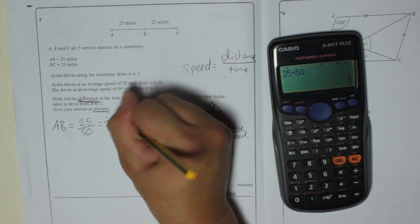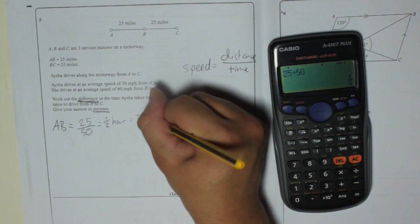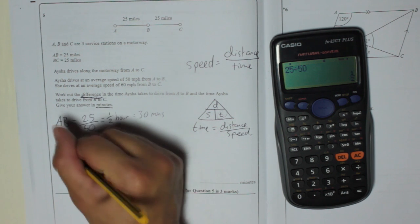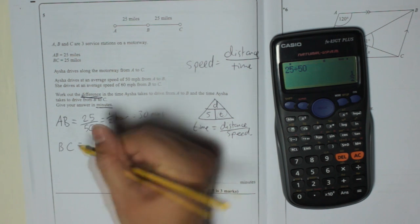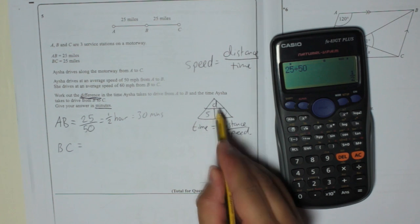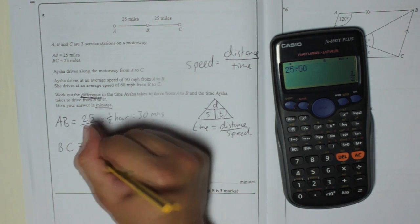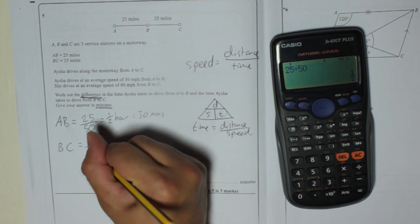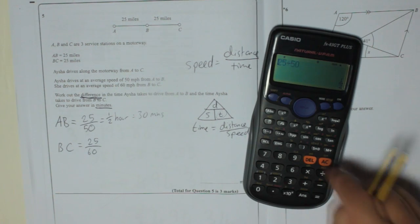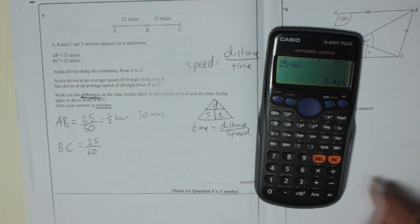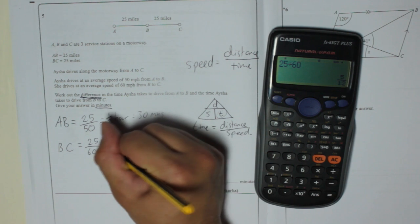Right, now we're going to do B to C. Again, time is distance divided by speed, so 25 miles divided by 60 this time. 25 divided by 60 is 5/12 of an hour, or 0.416, so I'm going to keep it as 5/12.